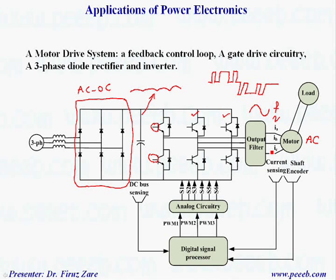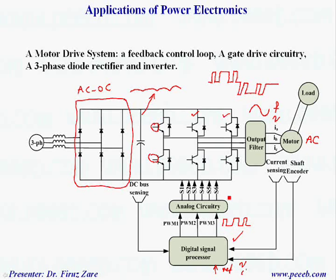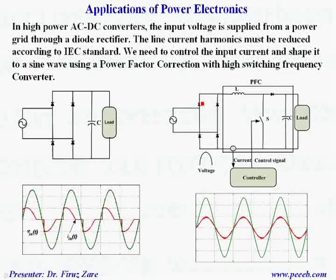The controller can measure the output current and other variables, compare with the reference — which can be voltage, current, or any other parameters — and then provide proper signals at low voltage. If this voltage is not suitable to turn on the switches, then a gate drive provides enough voltage or power to turn on the power switch.